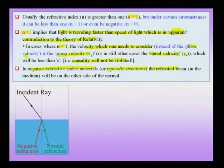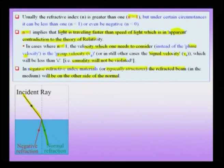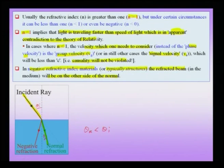In negative refractive index materials, the refracted beam is on the other side of the normal — a very strange phenomenon. These materials are sometimes called metamaterials. In normal refraction into an optically denser medium, the refracted angle is less than the incident angle. But in the case of negative refraction, the refracted beam lies on the other side of the normal. This was theoretically postulated some time back and has been physically realized for radio waves and other electromagnetic radiation in quite recent times, with active interest in making cloaking devices.